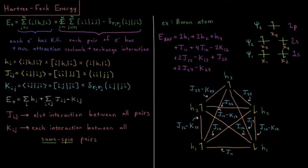And that plus the pairwise sum, sum over all pairs of electrons, i equals 1 to n, j equals i plus 1 to n, of the Coulomb integral of those two electrons, of those two spin orbitals, minus the exchange integral, if they have the same spin of those two spin orbitals.